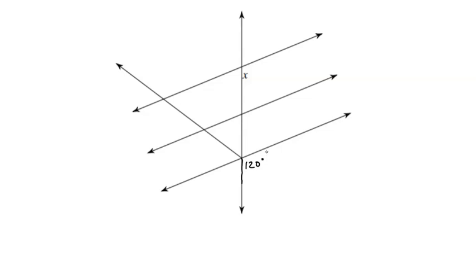In this one, the obtuse angle of 120 degrees is given, and I have several parallel lines here. That means that this is 120, this is 120, and this is 120. These two angles are corresponding, and these two angles are corresponding.